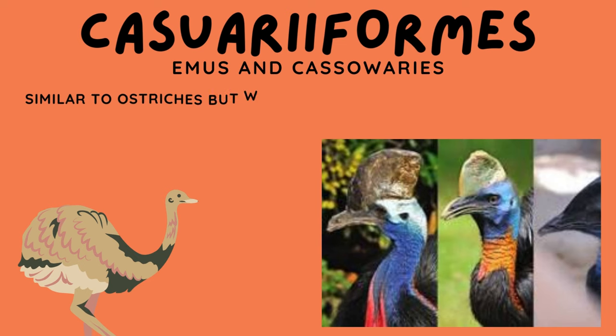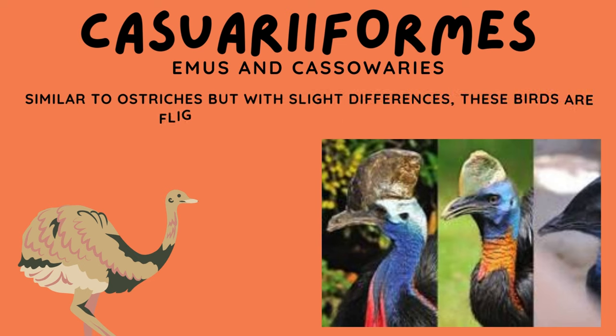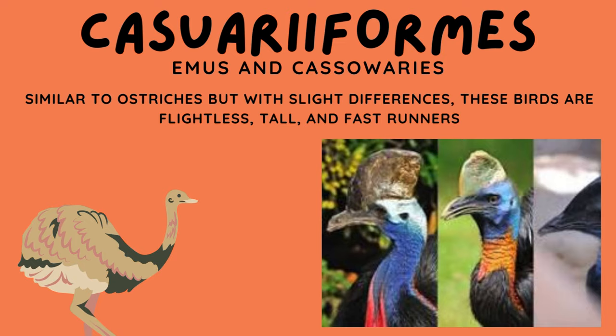Casuariiformes. These birds include emus and cassowaries. They are similar to ostriches but with slight differences. These birds are flightless, tall, and are very fast runners.